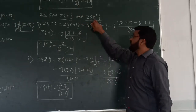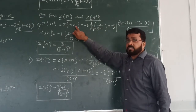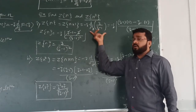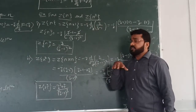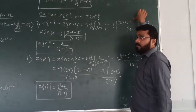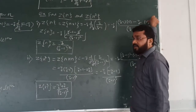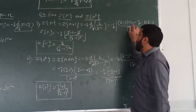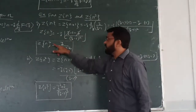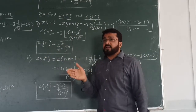Applying the formula: minus Z times d/dZ of F(Z), where F(Z) is the Z-transform of 1, which is Z upon Z minus 1. Now applying the quotient rule to differentiate Z upon Z minus 1: denominator times derivative of numerator, minus numerator times derivative of denominator, all upon denominator squared. Opening the bracket, terms simplify — the Z cancels — and we get the answer: Z-transformation of N equals Z upon (Z minus 1) squared.